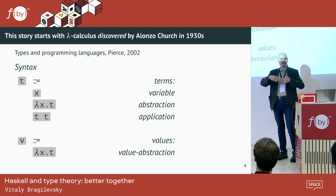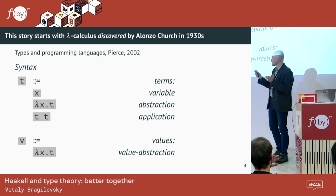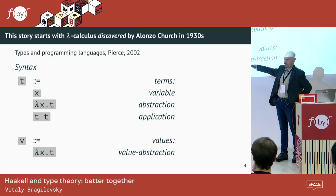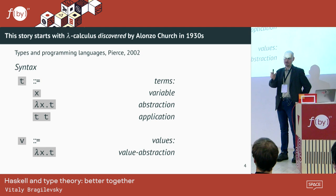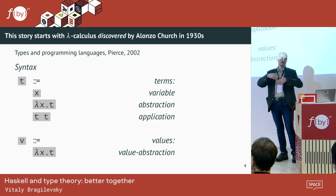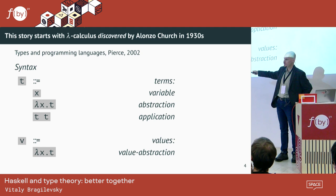There is abstraction and application. People always try to think: a variable is like a variable in programming or mathematics, and abstraction is a function. But you don't have to think about that — it's just syntactical. Application, or juxtaposition, is when two things are standing right next to each other. No other meaning behind the syntax. You can use this definition many times to build something bigger.